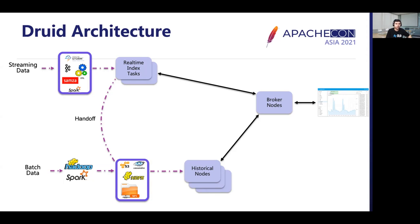Since data is distributed over real-time and historical nodes, we need a new set of nodes called broker nodes. Broker nodes keep track of where different data chunks are located in the cluster. They have the ability to scatter queries across multiple historical and real-time nodes, gather the results back from those nodes, merge those results, and send them back to the user. They also support a distributed caching layer where they can cache results coming from each of the partitions to avoid repeated calculations.